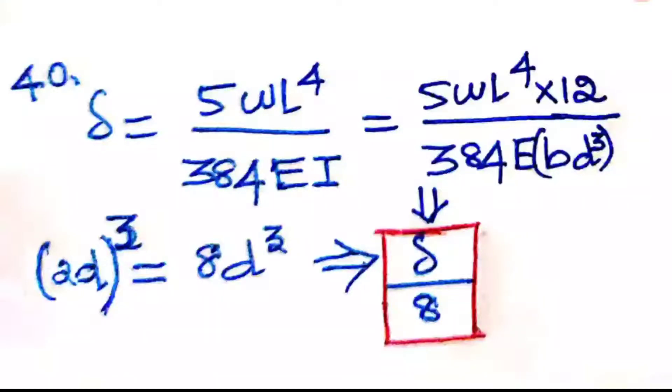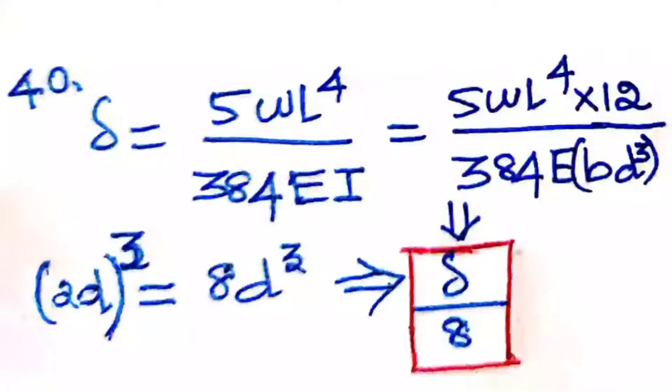In this equation, I has the formula bd³/12. If you substitute 2d instead of d, that's doubling the depth. You'll get 2d cubed here, which becomes 8d³.